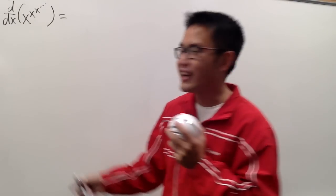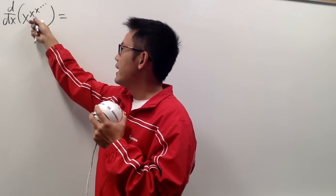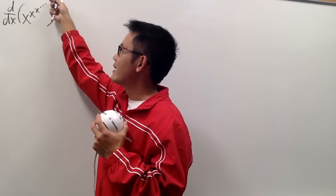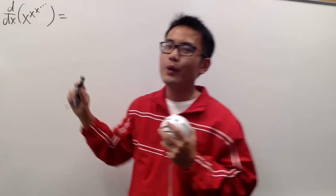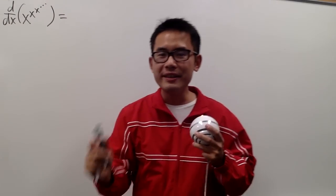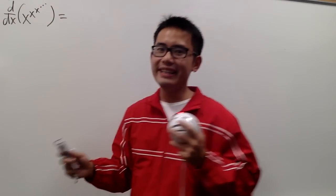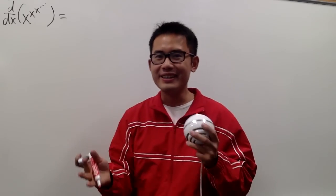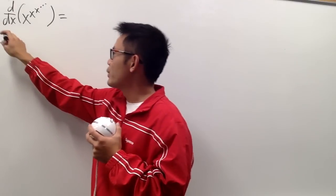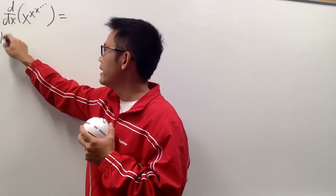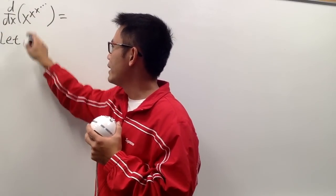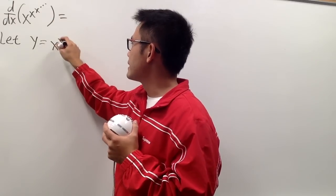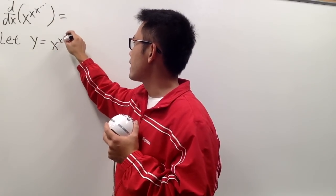Due to popular demand, I'm going to differentiate x to the x to the x to the x to the x to the x, dot dot dot, meaning we have infinitely many x going up like that in the power. Here's the usual approach. To do this, we'll first begin by saying that y is equal to x to the x to the x, dot dot dot.